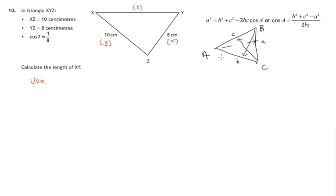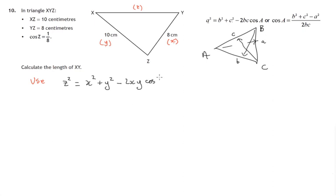And the cosine rule, instead of being in terms of A, B, and C, would have to be in terms of x, y, and z. Now we'll look at the pattern of this. We're trying to find XY, so this will be z squared. Notice a squared equals b squared plus c squared — that's the square of the other two sides — so it'll be x squared plus y squared. And then the pattern is: take away twice x times y, and then multiply by the cosine of angle Z, that's the angle opposite little z.